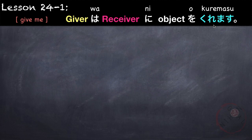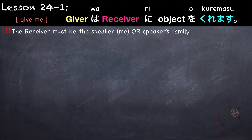Now we will learn a new verb: kuremasu, meaning 'to give.' But this is specific to giving me or giving the speaker. The receiver must be the speaker or the speaker's family, because in Japanese, the family is considered part of the speaker.